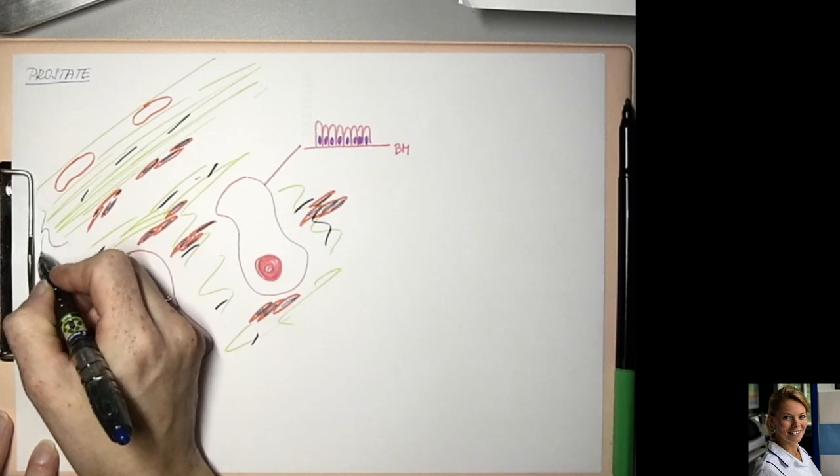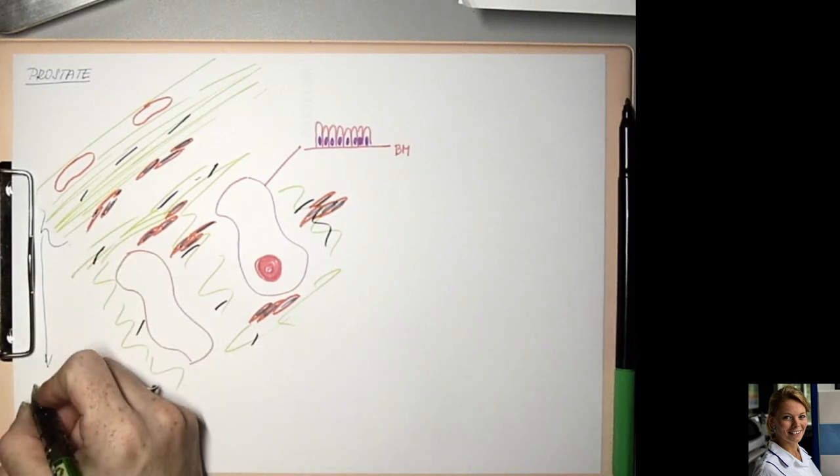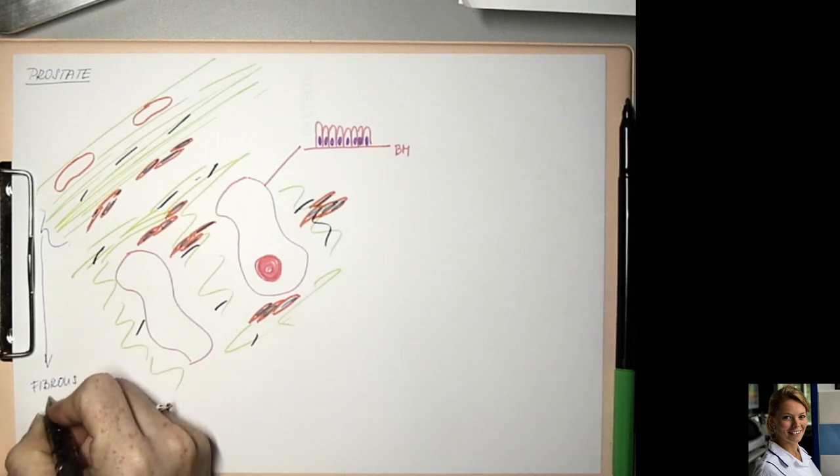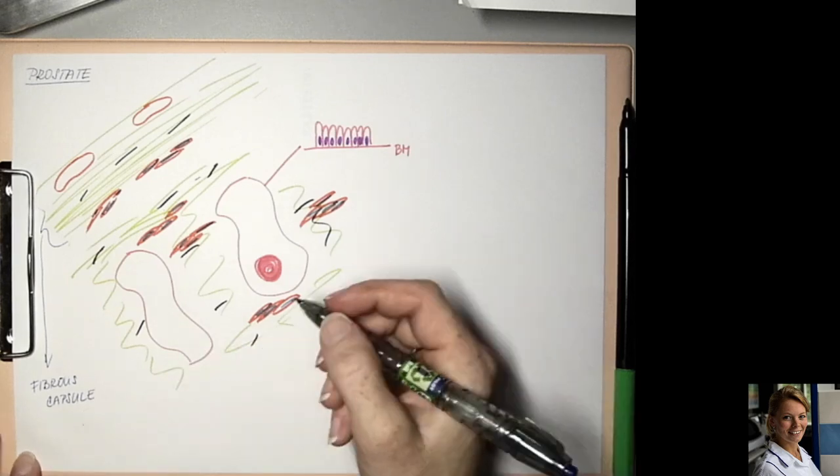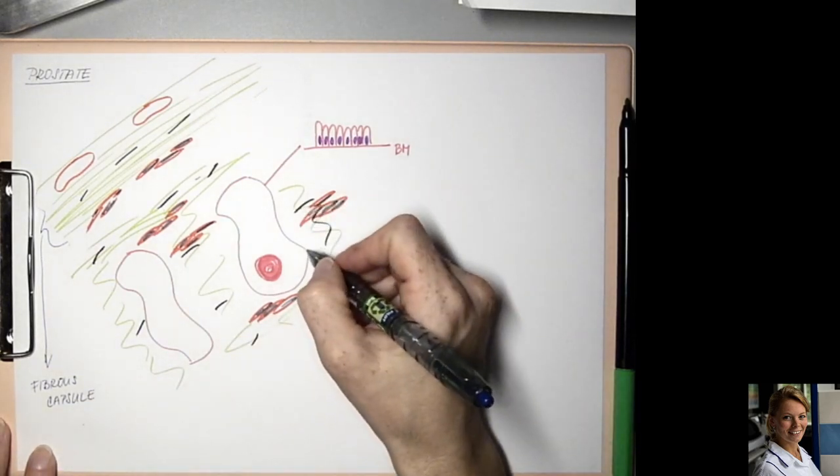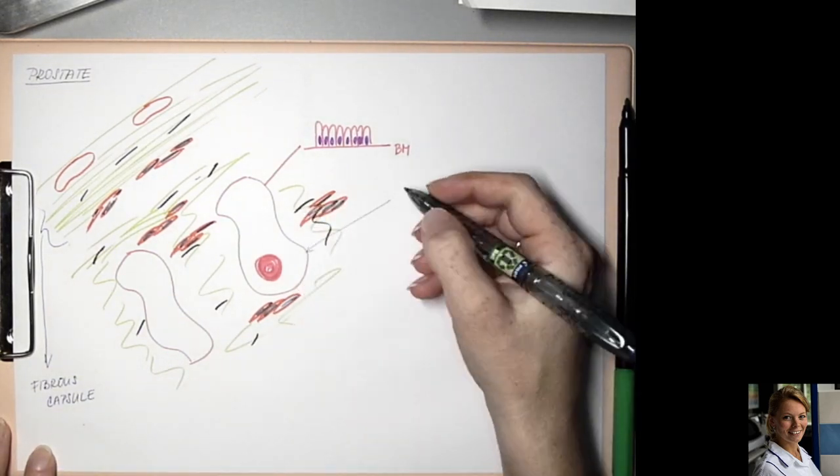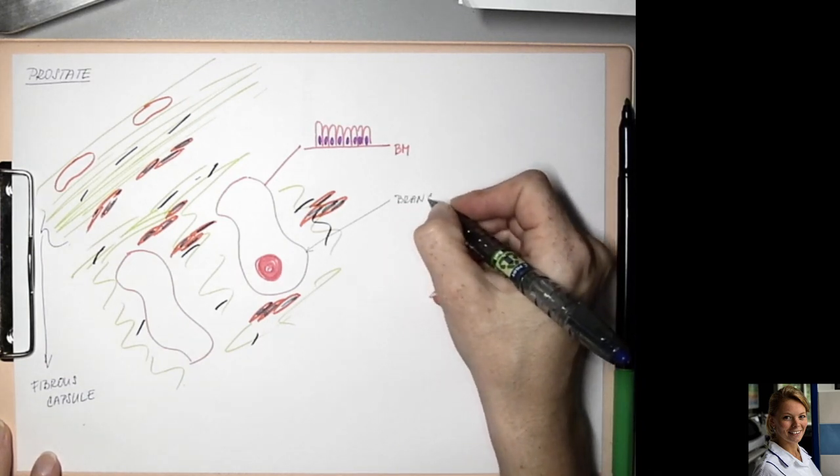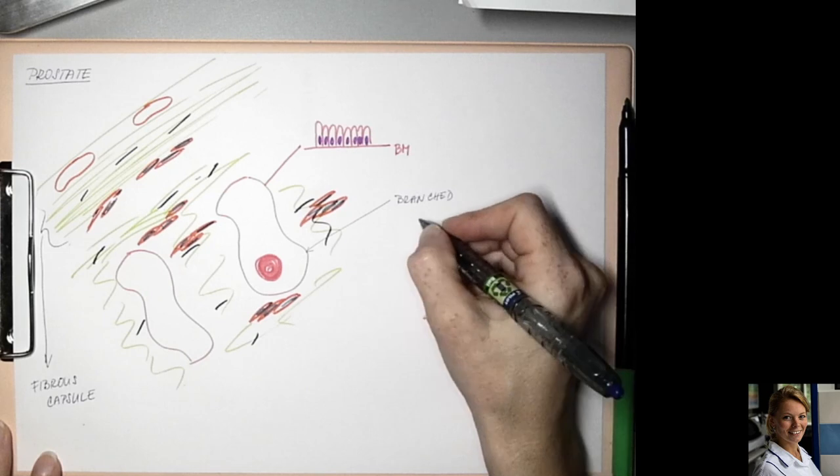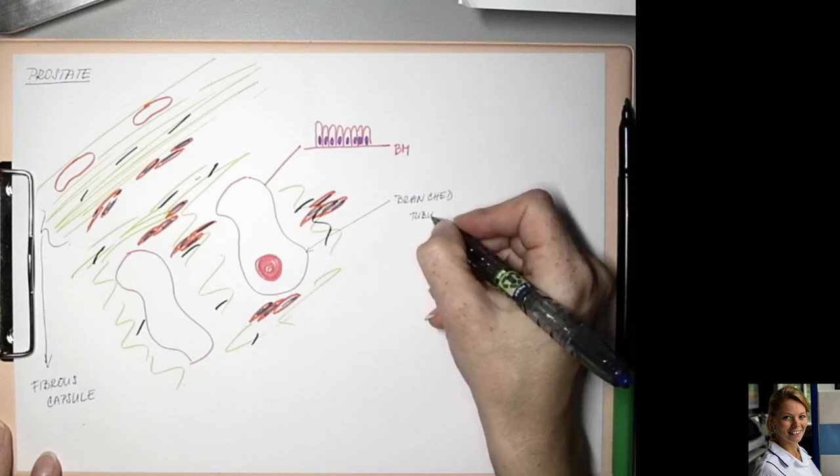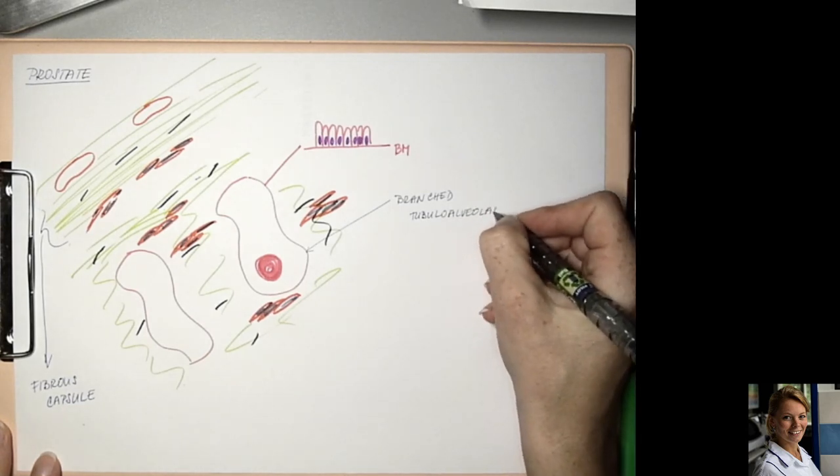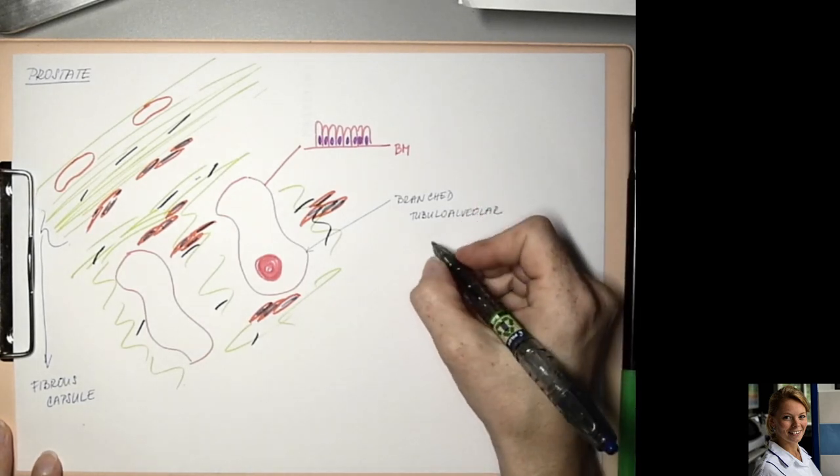Here you can see fibrous capsule. This is branched tubular alveolar glands.